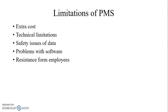Limitations of project management software. Extra cost refers to the cost involved in installing and maintaining project management software. Technical limitation refers to the limited technical knowledge and skill of the project team required for better handling of the software. Safety issues of data involve virus threats to data that can destroy valuable project records. Problems or faults with the software refer to defects in the software that may produce wrong information, hamper project activities, and may lead to failure of the project.